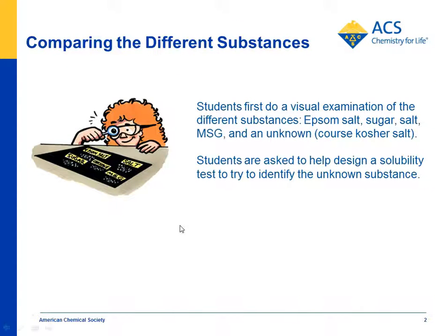The first thing students do is put down the different substances: Epsom salt, regular sodium chloride, sugar, MSG (that's monosodium glutamate), and the unknown. The unknown that you use is coarse kosher salt. It looks different than regular salt, so students may not be familiar with it.